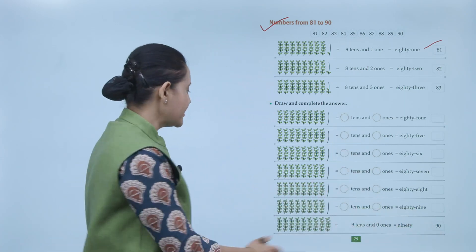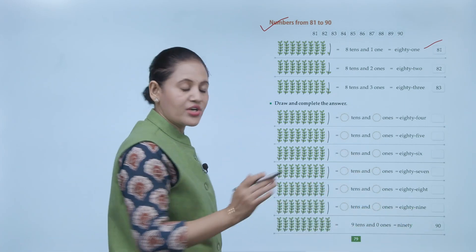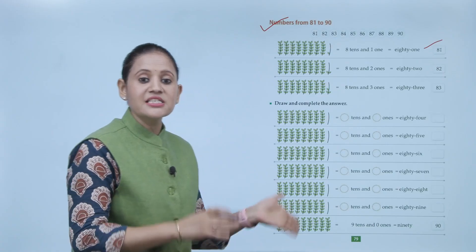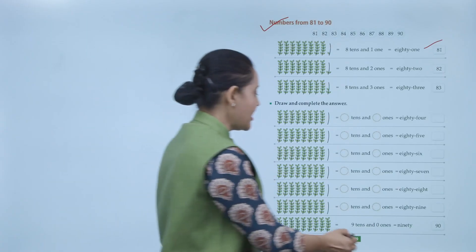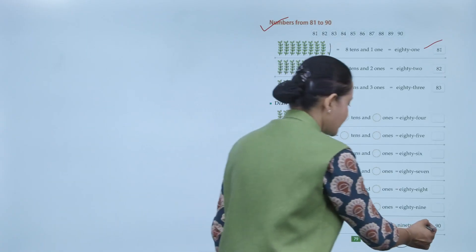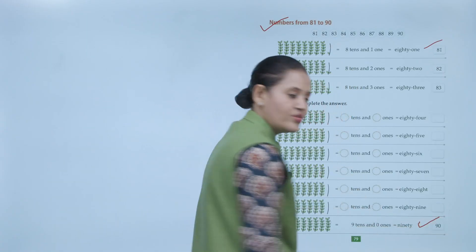Then comes 90 — meaning 9 tens and 0 ones — spelled N-I-N-E-T-Y, written as 9-0, which is 90.